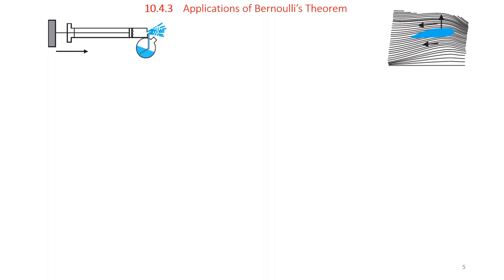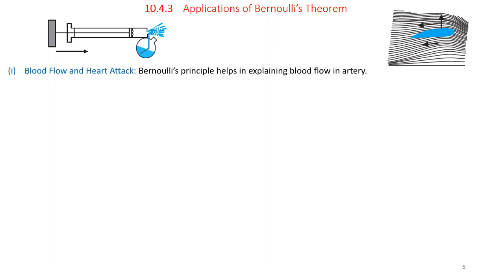Applications of Bernoulli's theorem: The carburetor of an automobile has a Venturi channel through which air flows at high speed. Pressure is lowered at the narrow neck and petrol is sucked up in the chamber to provide the correct air-to-fuel mixture for combustion. Filter pumps, aspirators, Bunsen burners, atomizers, and sprayers used for perfumes or insecticides work on these principles. Bernoulli's principle also has applications in blood flow and heart attack analysis.